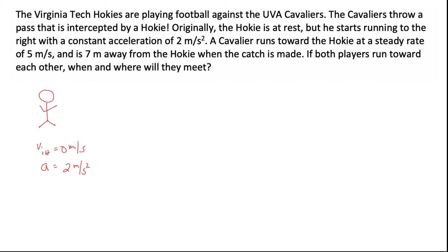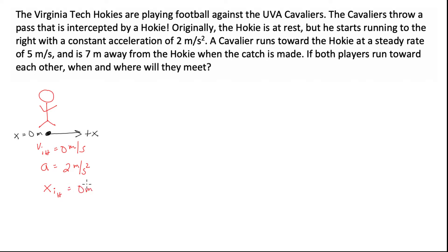In order to specify direction, I need to create a coordinate system. I'm going to say that positive x points to the right, and where the Hokie is initially, I'm going to call the x equals 0 position. Since the coordinate system points to the right and he accelerates to the right, his acceleration is going to be positive. His initial position, x-initial for the Hokie, is 0 meters because he starts right at the origin.